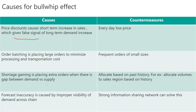The second cause is order batching — placing orders to minimize processing and transportation costs. For example, a retailer has a demand of 10 pieces every day, but to save ordering costs and avoid transaction costs, they order one or two weeks of items together. Suddenly they are placing a large order to the distribution center, and the distribution center assumes similar large orders will keep coming.